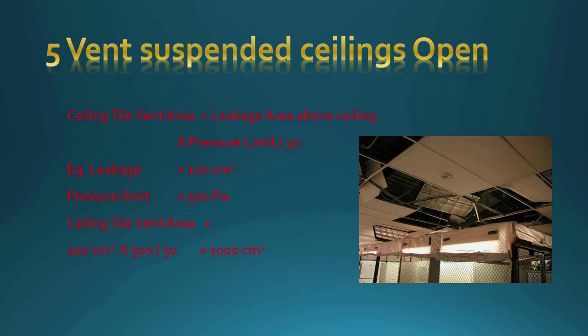Number five is about venting suspended ceilings — making sure they're open. I have a formula to determine whether you're going to lose your ceiling. There are two ways to lose a suspended ceiling: one is excessive pressure differential across the ceiling when it doesn't leak enough to vent to the space above; the other is that nozzle velocity can physically blow the tiles out. The photo shown here looks like a pressure event that pushed the ceiling up rather than tiles blown out by velocity pressure — either way it must be considered.